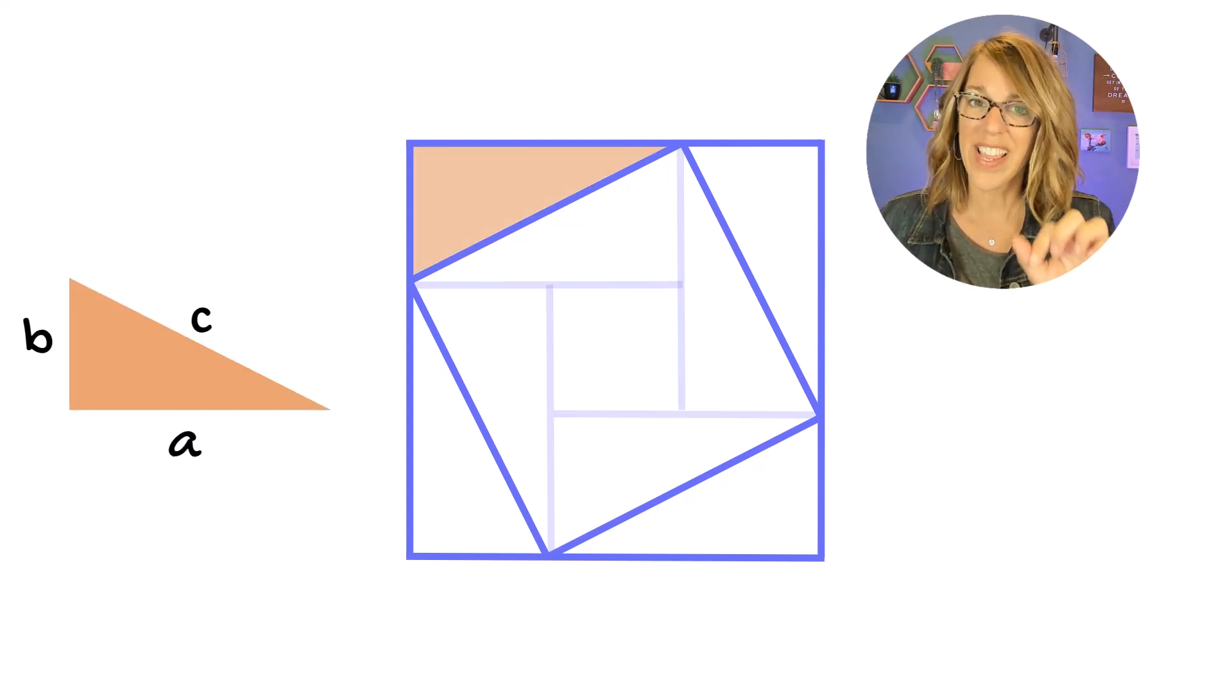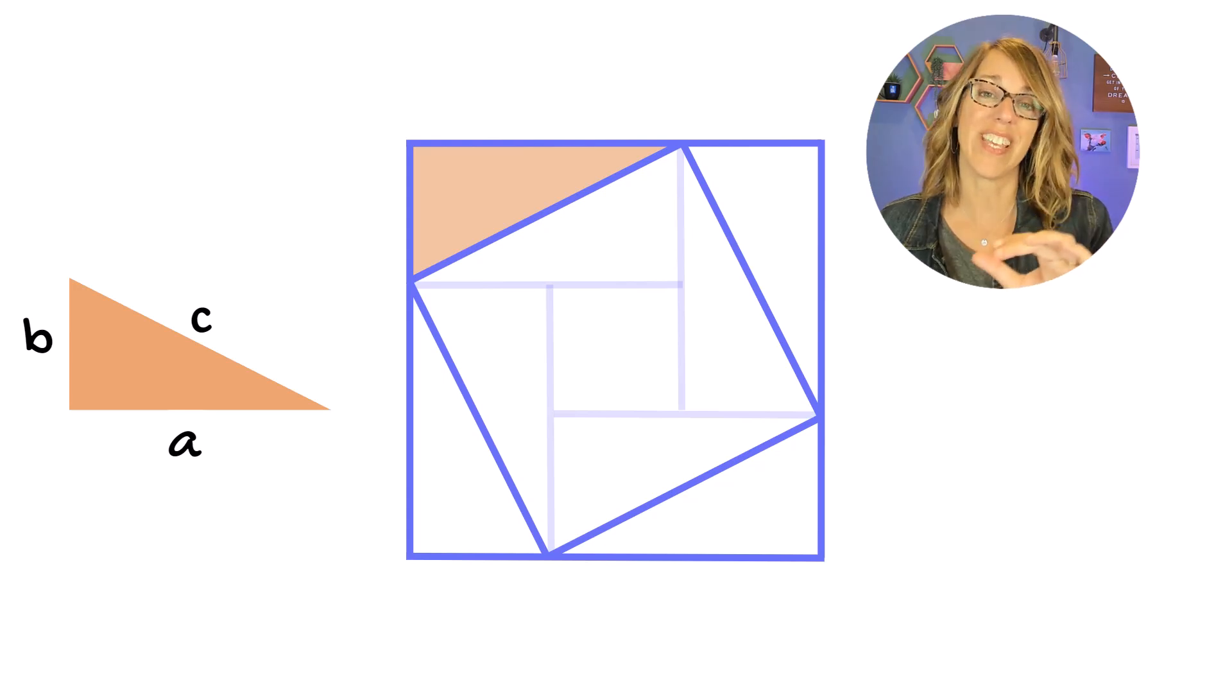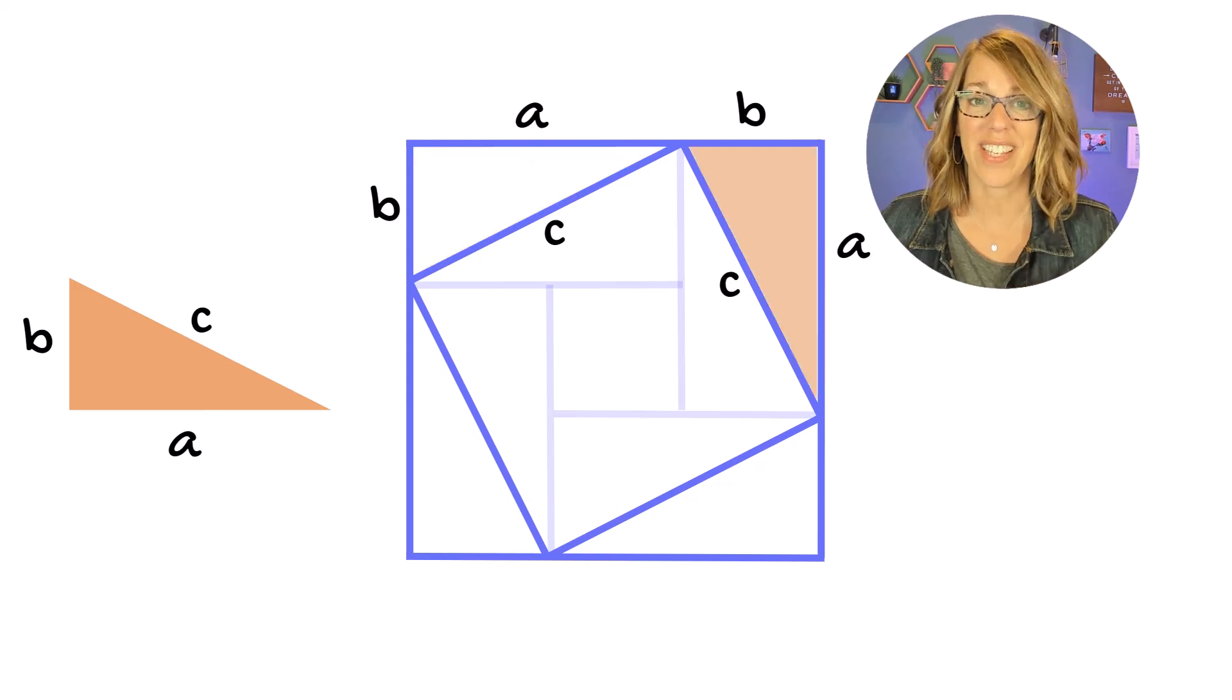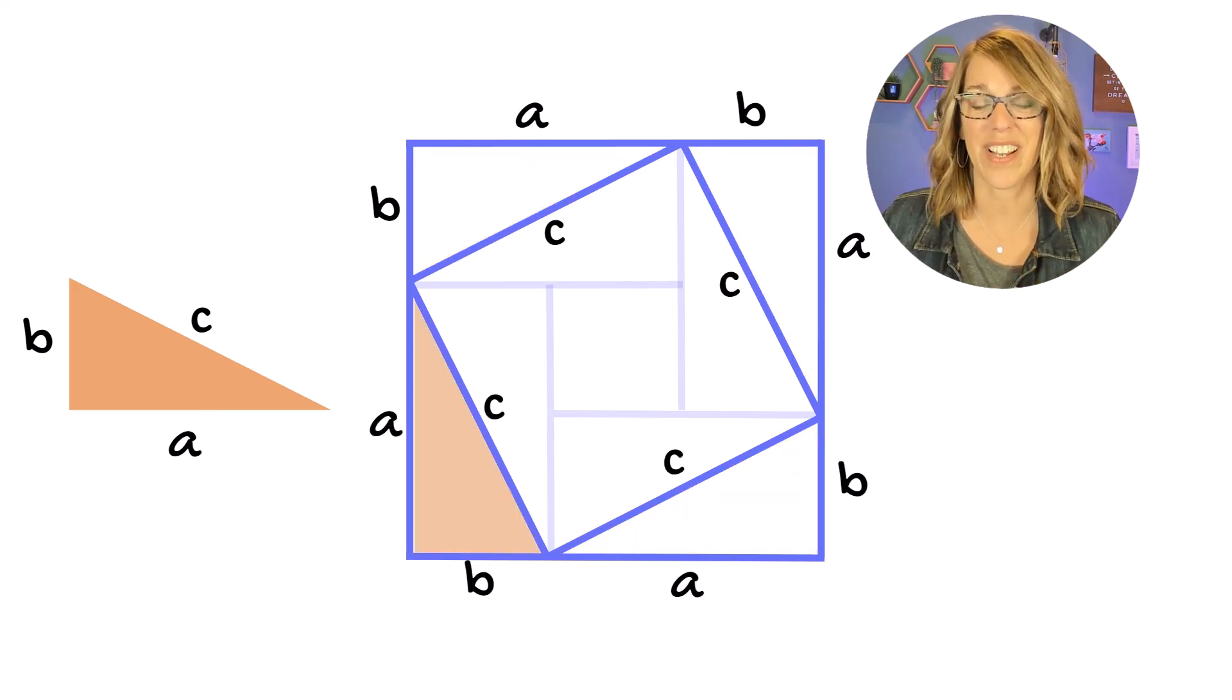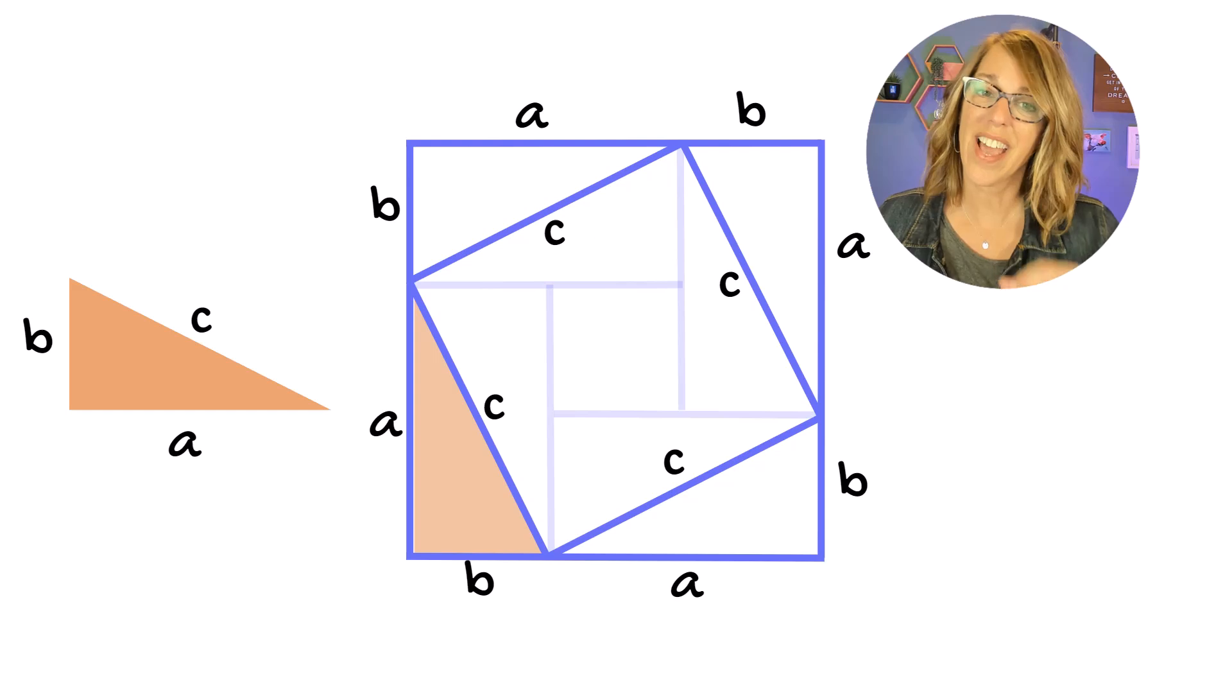we want to label those triangles that are created between the inner and the outer squares. They're right triangles, so let's go ahead and label each of these consistent with the Pythagorean Theorem. A and B for the sides, and C for the hypotenuse.